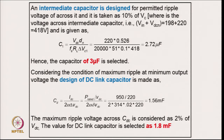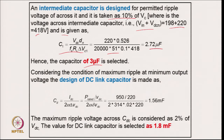For the intermediate capacitor, a permitted ripple of 10 percent is considered. The voltage across the capacitor is V_in + V_out. From the relation for the given ripple voltage, the value is approximately 2.72 μF, and a slightly higher value is selected to ensure the ripple stays below 10 percent.